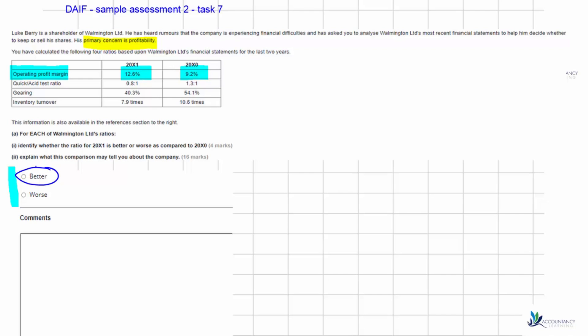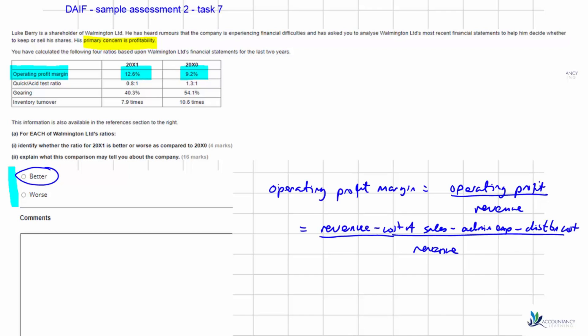The next part asks what does this tell us about the company. The way to approach this is to write out the formula on your scrap paper in your assessment. Operating profit margin equals operating profit divided by revenue. We know that the operating profit margin has increased, which is a good thing. Operating profit itself equals revenue minus cost of sales minus administrative expenses minus distribution costs.